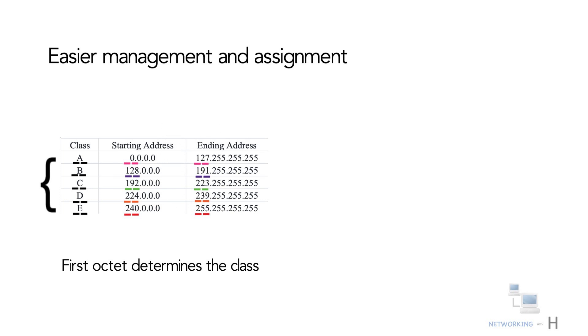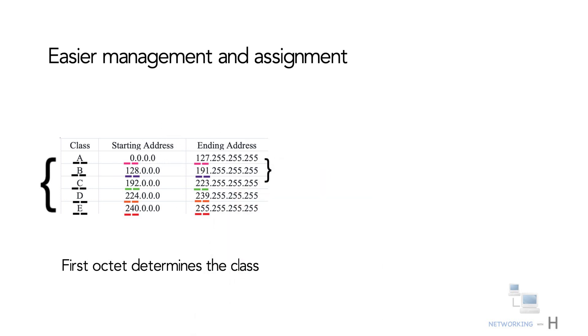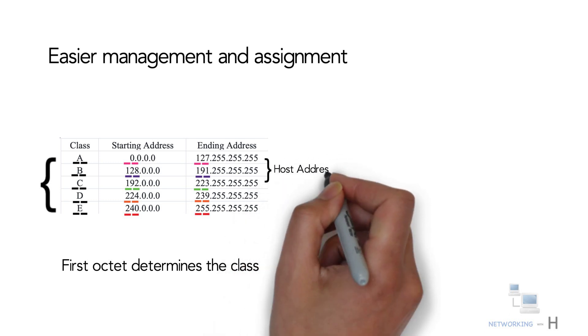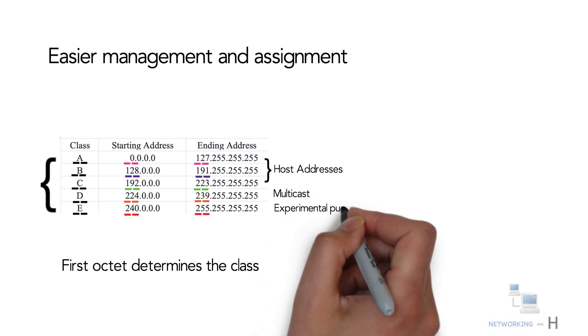IP addresses from the first three classes—A, B, and C—can be used for host addresses. The other two classes are used for other purposes: Class D for multicast and Class E for experimental purposes.